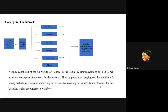The conceptual framework comes from a study conducted at the University of Ruhuna in Sri Lanka by Ramanayaka and others in 2017. From their study, they carried out a usability study on their site and came up with six elements that comprise a usability study: effectiveness, learnability, satisfaction, usefulness, accessibility, and efficiency. Testing all these elements helped them to find out if their portal was usable.